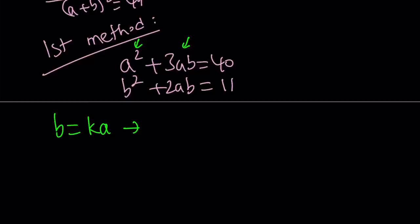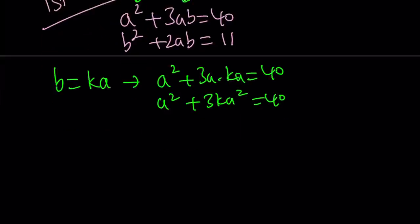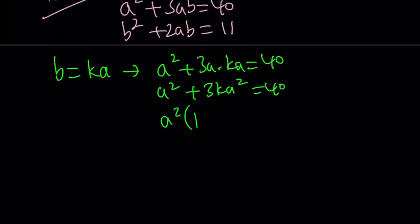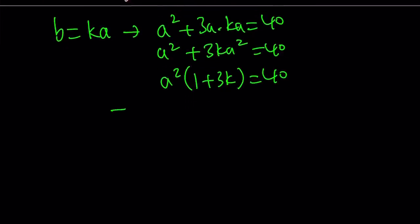That implies the following: a squared plus 3a times ka equals 40. Let's simplify this: a squared plus 3ka squared equals 40. Let's take out a squared. That's going to be helpful in a little bit.